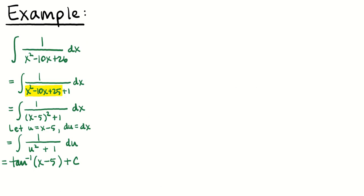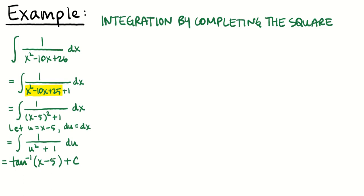This is what we call integration by completing the square, at least in AP calculus. Out in the wider world, there are other integrals requiring completing the square that won't work out this neatly. In my professional opinion, if this shows up on the AP exam, it would look like this — one off from a perfect square denominator. I'll show you another one where we complete the square and get a different arc trig result, but I think you'll see why this arc tangent form is more likely.